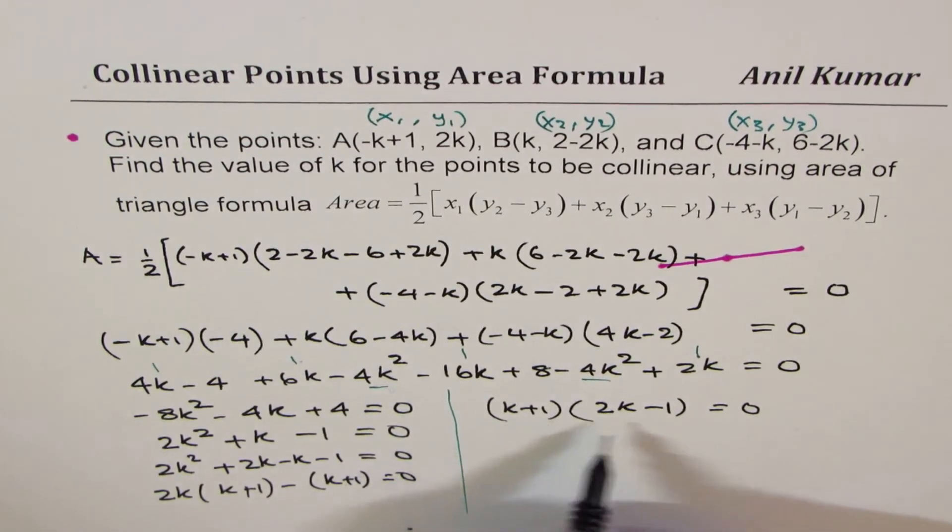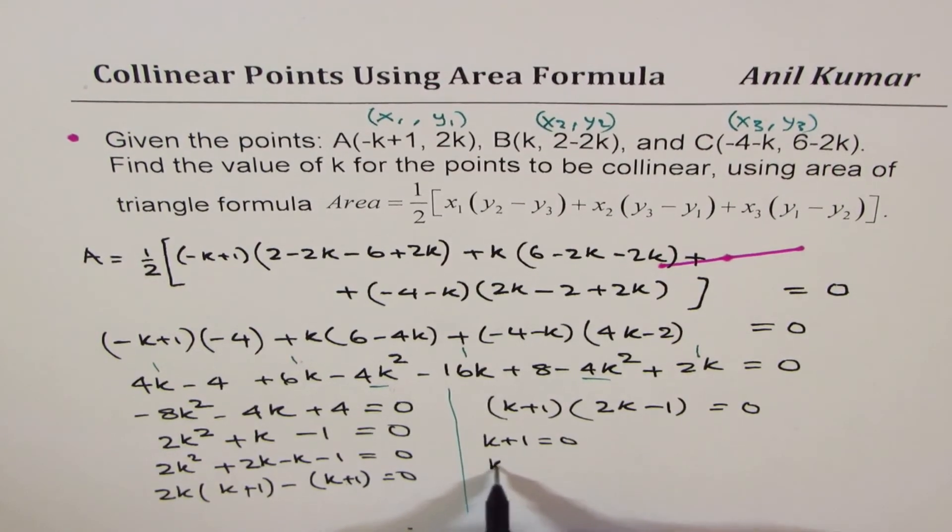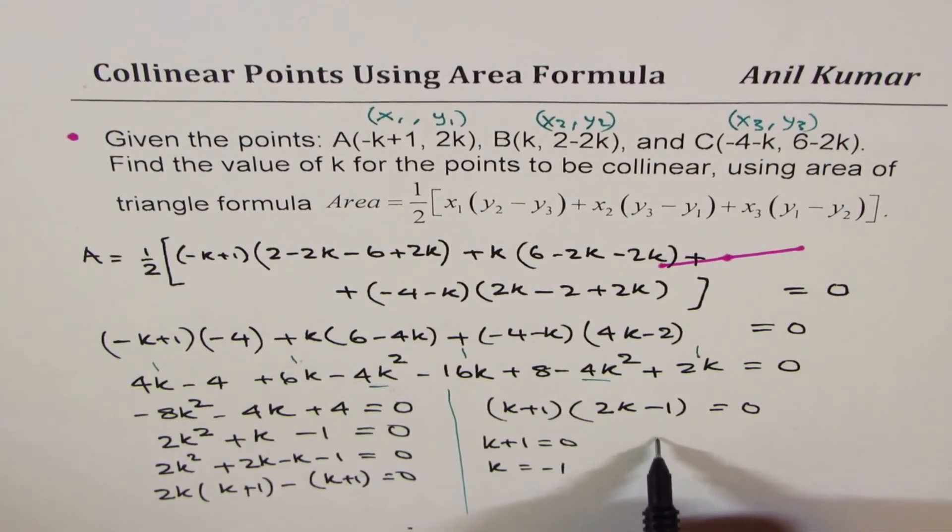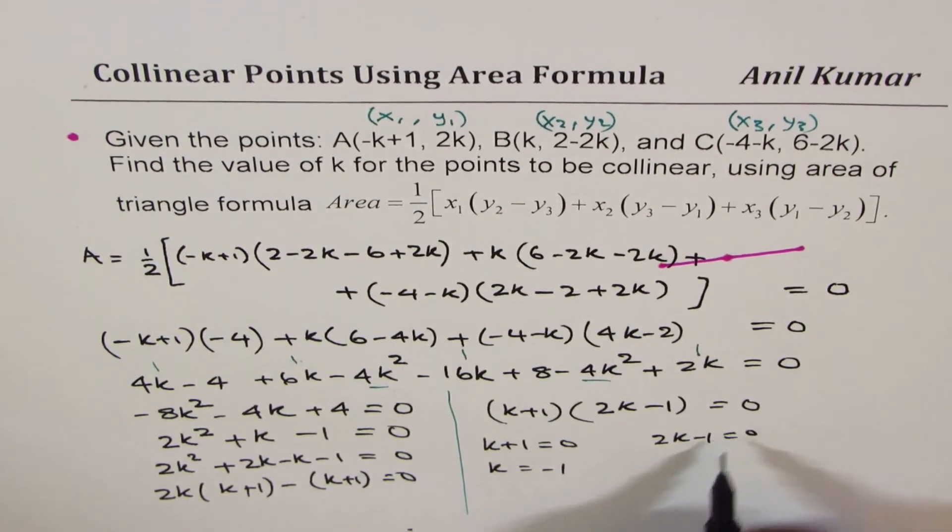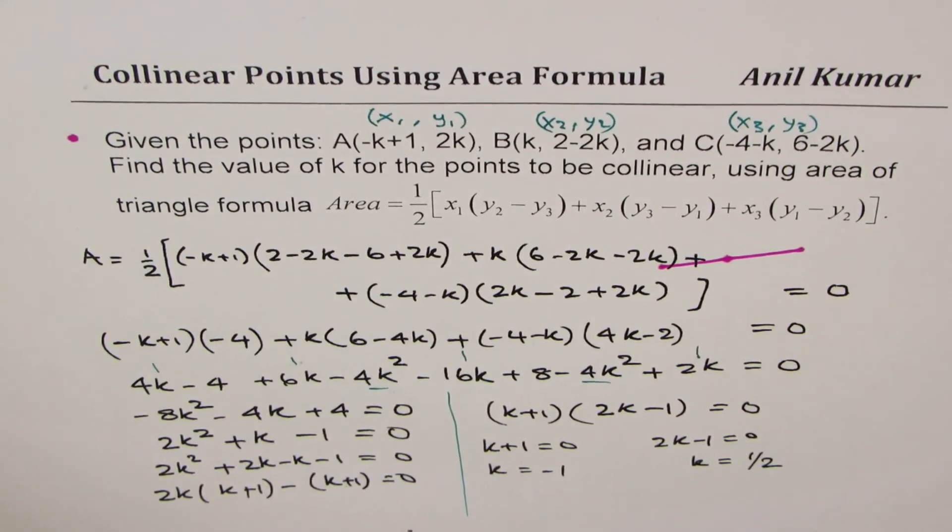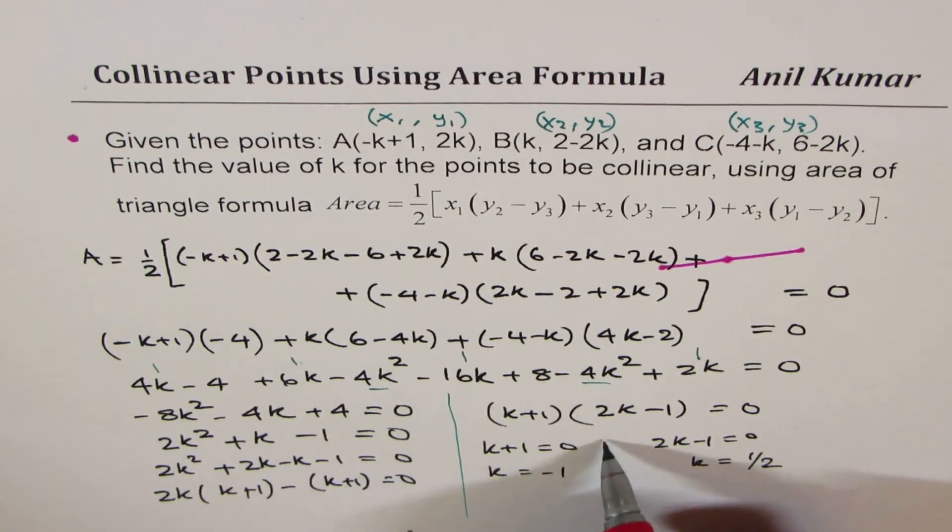Now that means there are two possible values of k. One is k+1 equals to 0, that gives us k equals to -1. The other one is 2k-1 equals to 0, which gives k equals to half. So we have two solutions for the given equation.